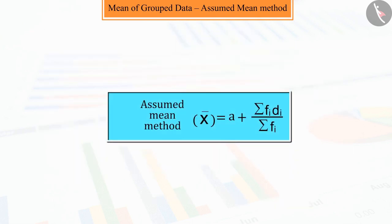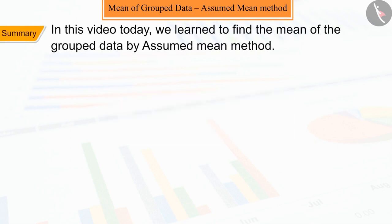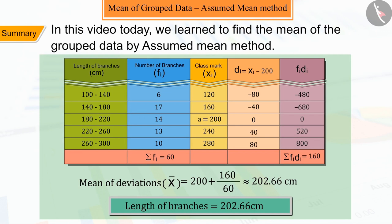So hopefully, you must have understood this method of finding the mean. This method of finding the mean is called assumed mean method. In this video, we learned to find the mean of the grouped data by assumed mean method. In the next video, we will see interesting examples based on it.